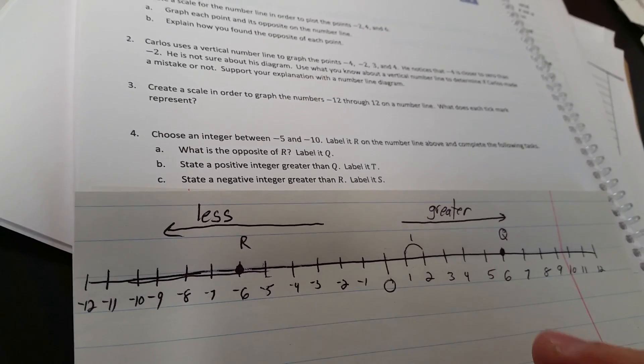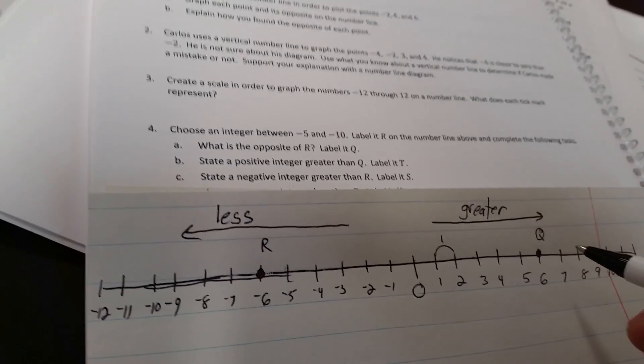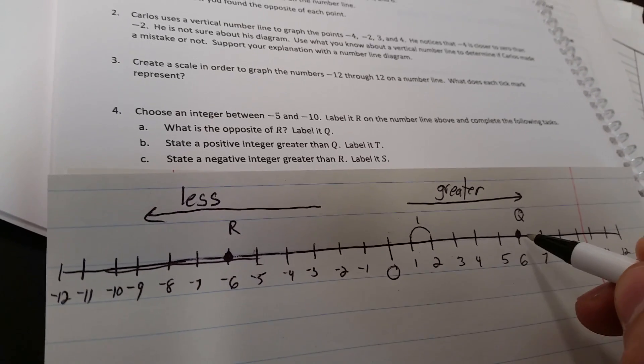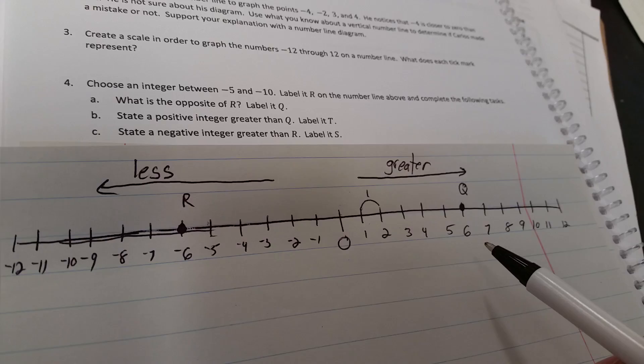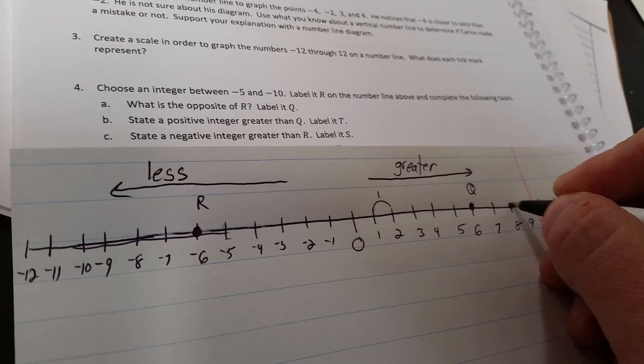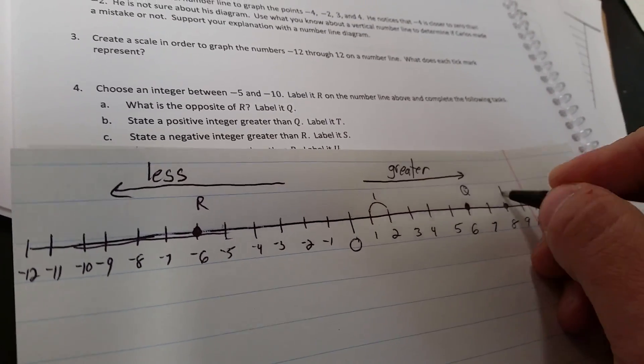State a positive integer greater than q. So we're starting at q, and a positive integer that's greater than q, again, we said as we move to the right on our number line, our values are greater. So I'm going to choose 8. That's to the right of q. I'm going to label that t.